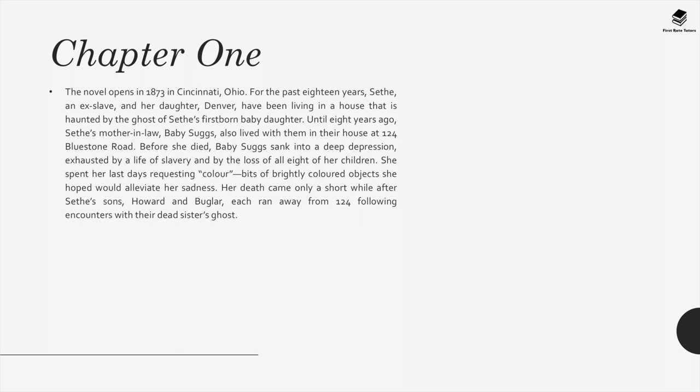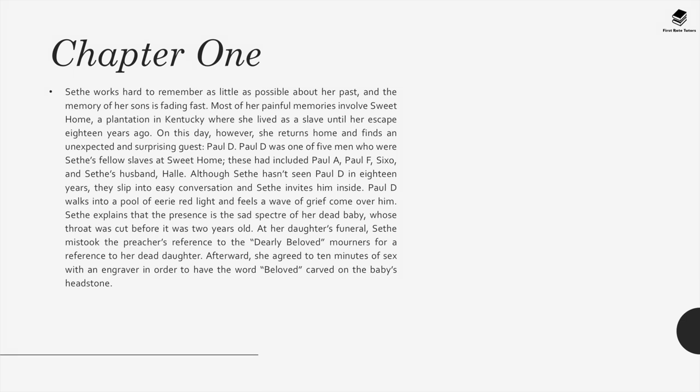Before she died, Baby Suggs sank into a deep depression, exhausted by a life of slavery and by the loss of all eight of her children. She spent her last days requesting colour — bits of brightly coloured objects she hoped would alleviate her sadness. The death came only a short while after Sethe's sons Howard and Bugler each ran away from 124 following encounters with their dead sister's ghost. Sethe works hard to remember as little as possible about her past, and most of her painful memories involve Sweet Home, a plantation in Kentucky where she lived as a slave until her escape 18 years ago.